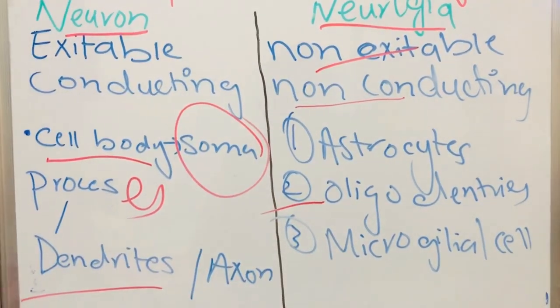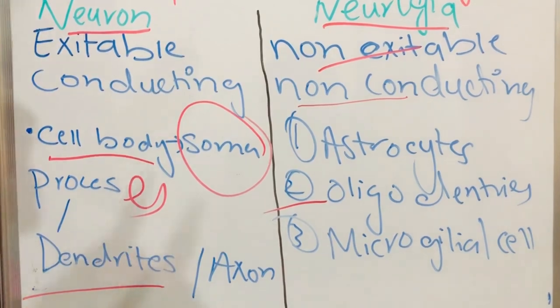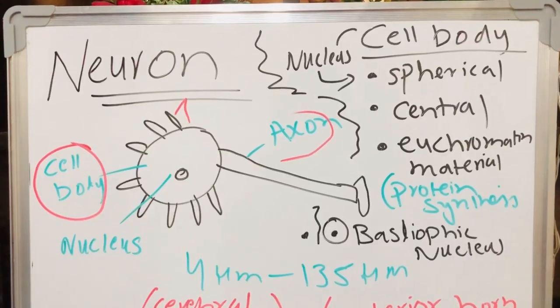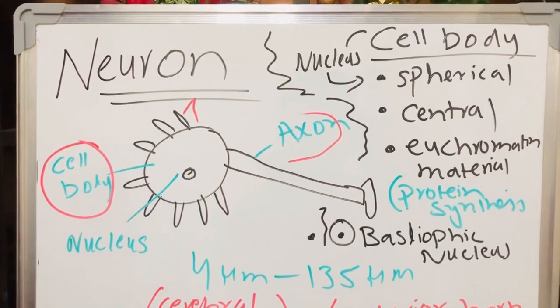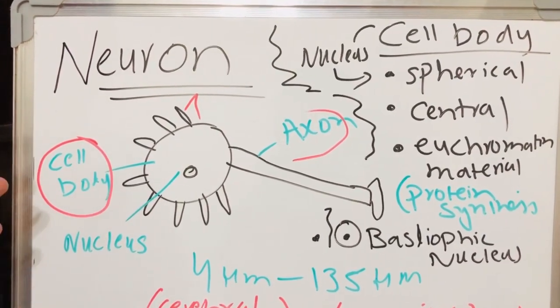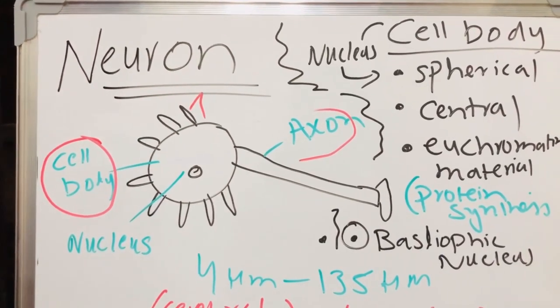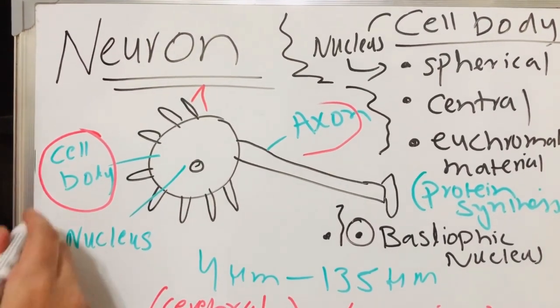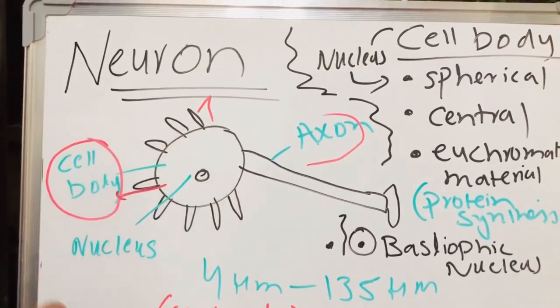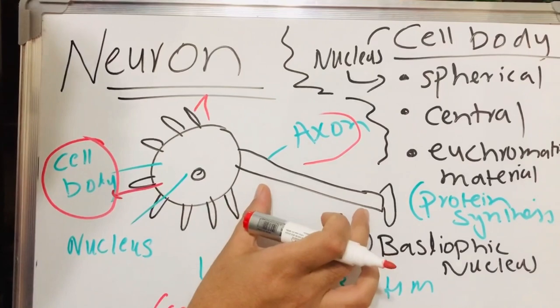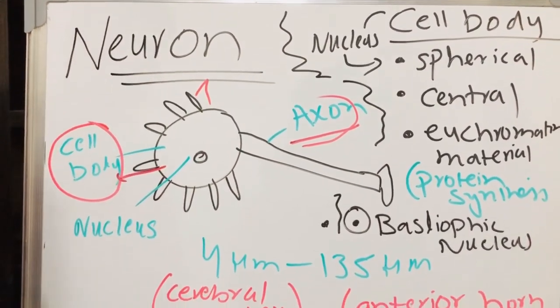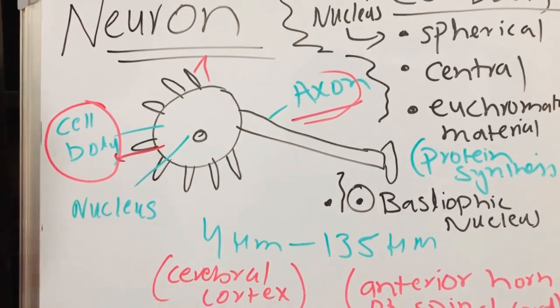As cell is our basic unit of life, same as neuron is the basic functional unit of nervous system. It consists of our cell body, the projection-like structure dendrites, and this long part called axon. The size of neuron varies from 4 micrometer to 135 micrometer.